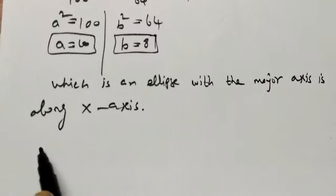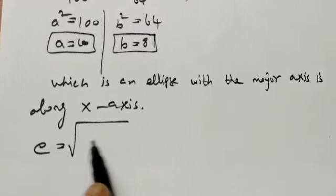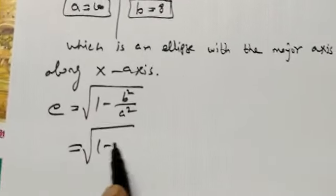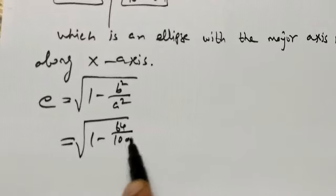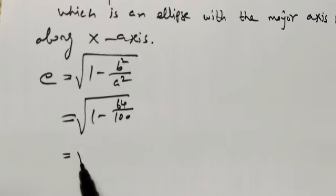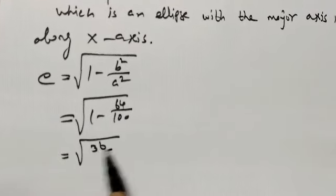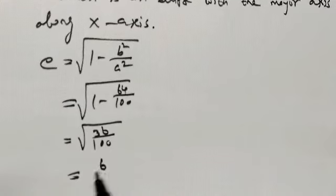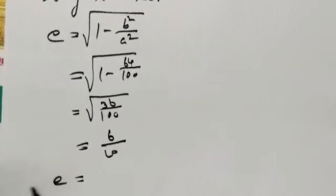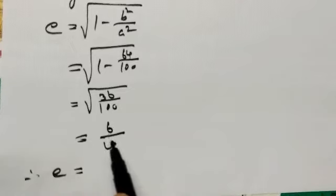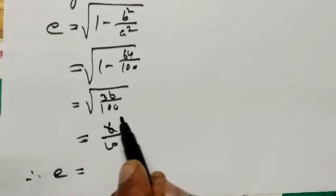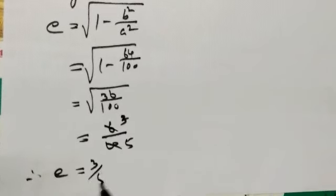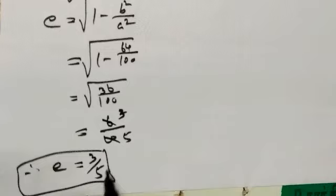First, eccentricity e. e = √(1 - b²/a²) = √(1 - 64/100) = √(36/100) = 6/10 = 3/5. Therefore e = 3/5.